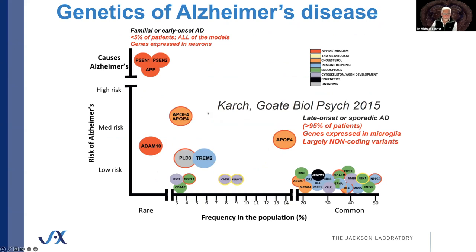You're all aware that there are a very small number of rare mutations which cause Alzheimer's disease, but the vast majority of Alzheimer's genetic risk resides in low-risk, relatively common alleles. Greater than 95% of patients do not have those familial causative mutations — they have some combination of relatively common, relatively low-risk variants. A large percentage of these are expressed in microglia and a large percent of genetic risk is actually in non-coding variants, which makes modeling this genetics particularly difficult.